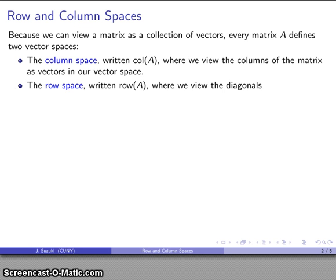The other possibility is I might take the row space, written row(A), where I view the rows of the matrix as vectors in our vector space. So our column space, we're viewing the columns as vectors. In the row space, we're viewing the rows as vectors.